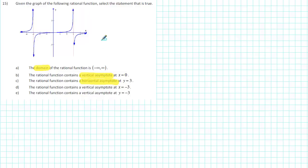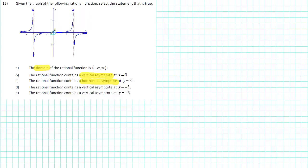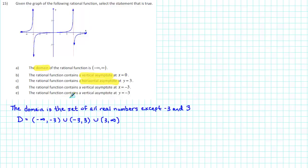Let's take a look at the graph and identify the domain and any vertical and horizontal asymptotes. Notice that the dashed red vertical lines divide our graph into three pieces: one piece to the left of x equals negative 3, another piece between x equals negative 3 and 3, and another piece to the right of x equals 3. The function is undefined at x equals negative 3 and x equals 3 because the dashed vertical lines do not intersect the graph. The domain is not the set of all real numbers, so we can eliminate A as one of our choices.